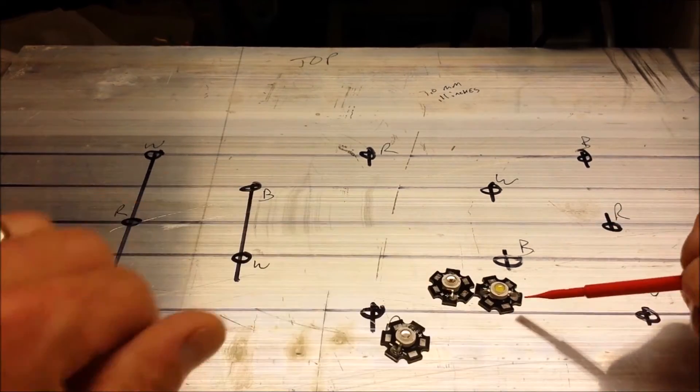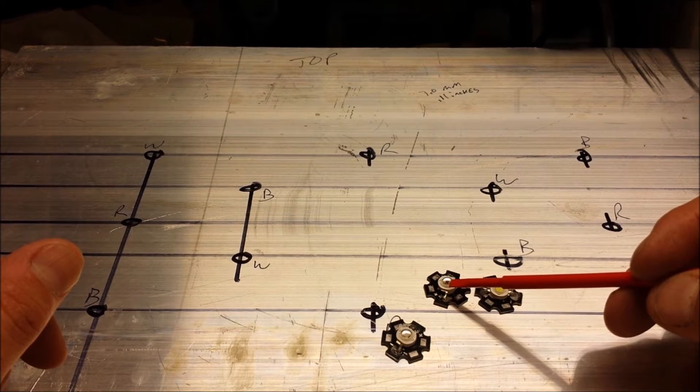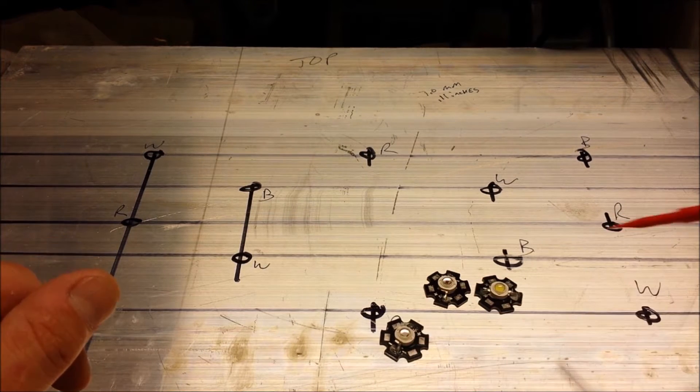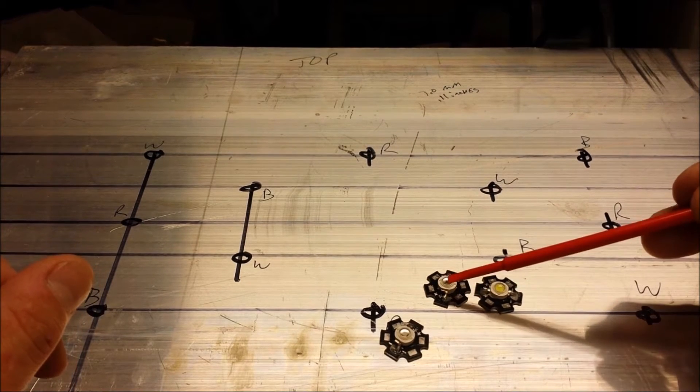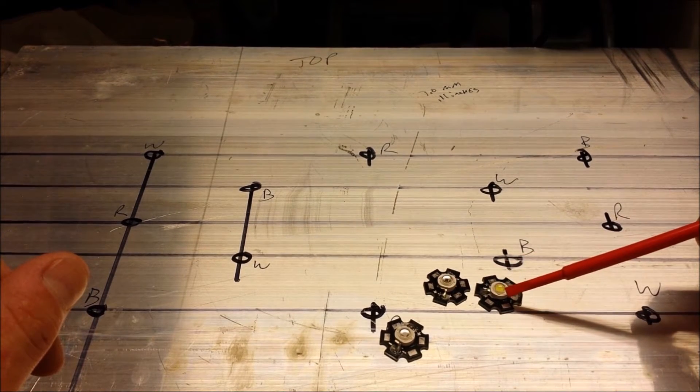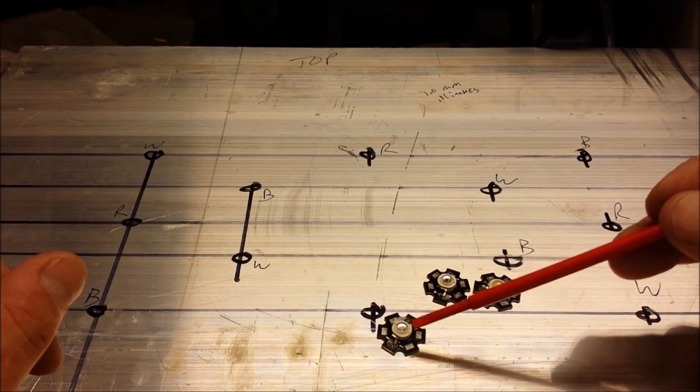Okay, so now that I have the LEDs, you can see that I have kind of this yellow tint. This one has a little red dot and this one has nothing. So if I remember correctly, this one is red, this one is white, and then the plain one here is blue.